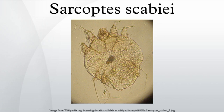The discovery of the itch mite in 1687 marked scabies as the first disease of humans with a known cause. The Italian biologist Diacinto Cestoni showed in the 18th century that scabies is caused by the mite Sarcoptes scabiei, variety hominis.